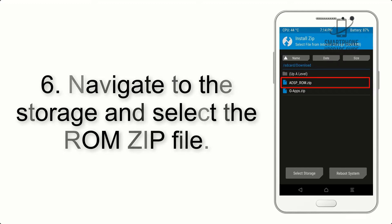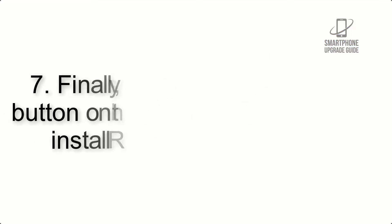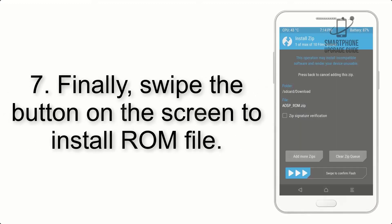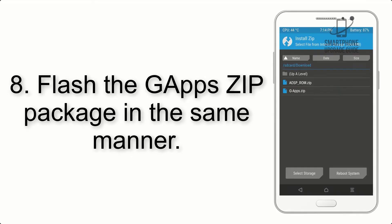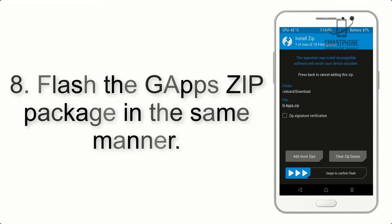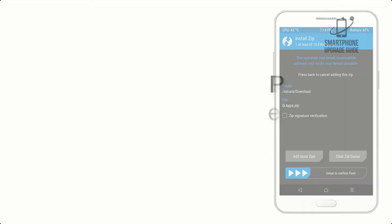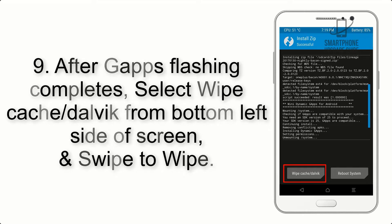Step 6: Navigate to the storage and select the ROM zip file. Step 7: Finally, swipe the button on the screen to install the ROM file. Step 8: Flash the GApps zip package in the same manner.